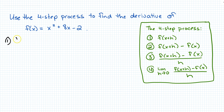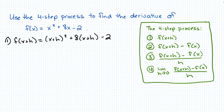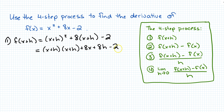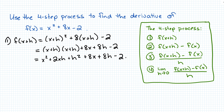For step one, I need to find f of x plus h. So everywhere there's an x in my original function, I'm going to put x plus h. So I have x plus h squared plus 8 times x plus h minus 2. I'm going to expand x plus h squared — that's x plus h times x plus h — and expand 8 times x plus h. When I FOIL x plus h squared, I get x squared plus 2xh plus h squared plus 8x plus 8h minus 2.